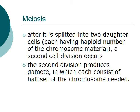The second division produces gametes, in which each consists of half a set of chromosomes needed to create a whole cell.